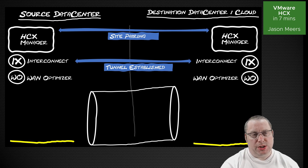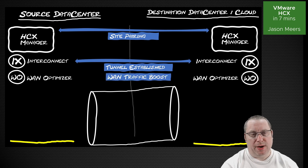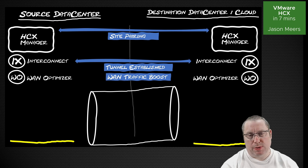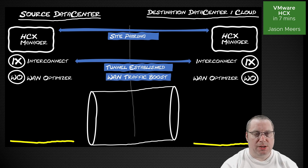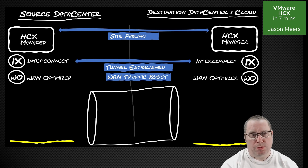The next thing, which is optional but usually recommended, is a WAN optimizer. We have a WAN optimizer deployed at either end, and once we've got a WAN optimizer, we've got a WAN traffic boost between them. This is very important if you're doing stuff between data centers. It might not be as important if you're moving to the cloud, but the option is there to optimize or boost the performance of traffic if you're going over a WAN.